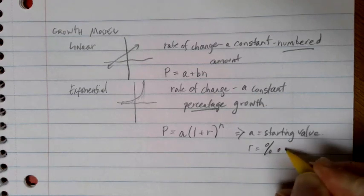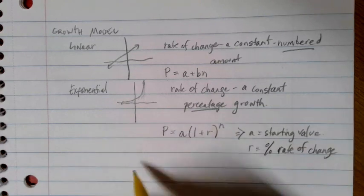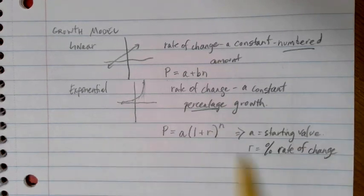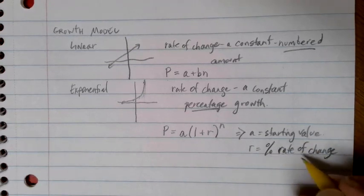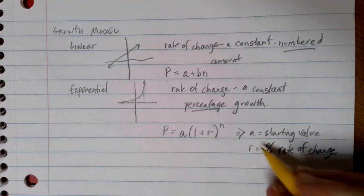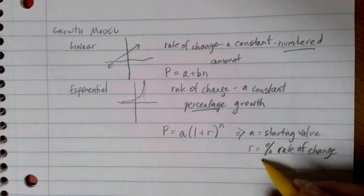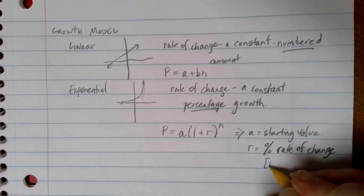The R is that percent rate of change. That's the defining characteristic of an exponential function, and so we need to make sure that we have what that R value is. Now, we can't put percentages into formulas. It's really important that any time that you have that percentage given to you as a rate of change, that you put it into decimal form.